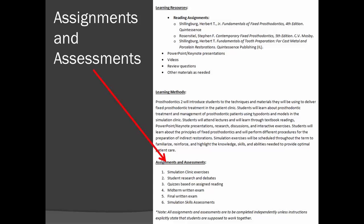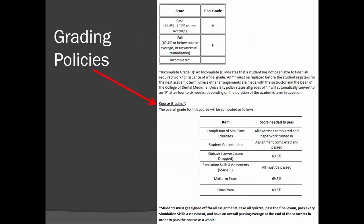The dates of those are listed in the syllabus. In order to maintain academic integrity during quizzes and exams, no notes, books, phones, or other electronic media or paper will be allowed in the room. Students may not leave the room in the middle of quizzes or exams, so make sure that you are prepared once you start to continue and complete. In order to pass the course, each item must be completed and receive a passing score. Students must get signed off for all assignments, take all quizzes, pass the final exam, pass every simulation skills assessment, and have an overall passing average at the end of the semester in order to pass the course as a whole. An incomplete, or I, indicates that a student has not been able to finish all required work for issuance of a final grade. An I must be replaced before the student registers for the next academic term.